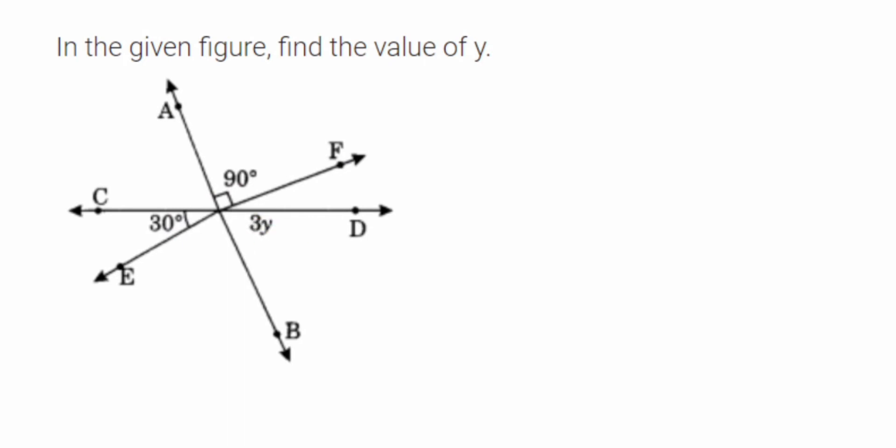If you look here, this line and this line - this angle is vertically opposite to the 90 degree angle. Let me take the intersection point as O. Then angle EOB is vertically opposite to angle AOF, so this angle will also become 90 degrees.